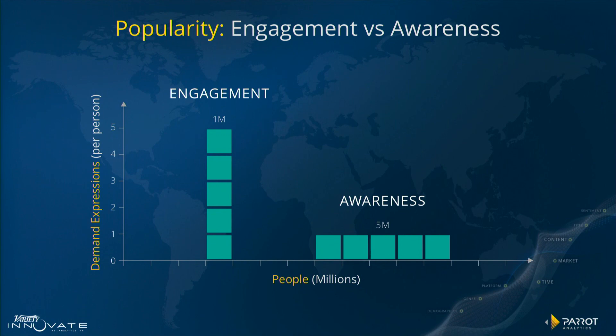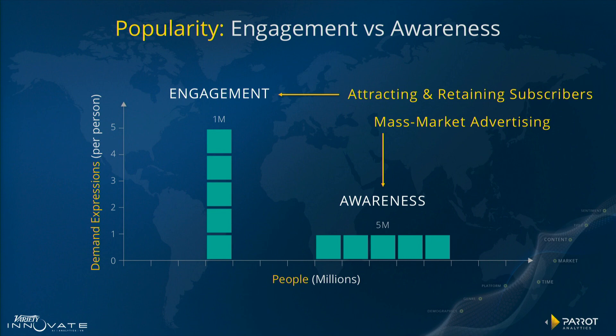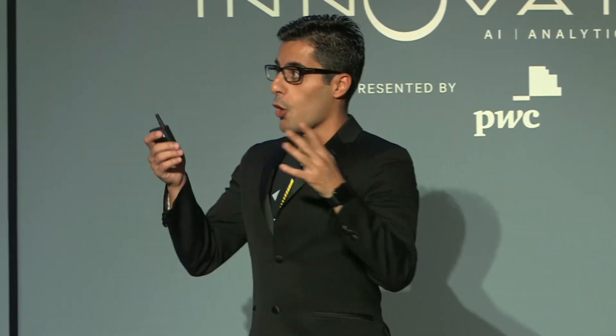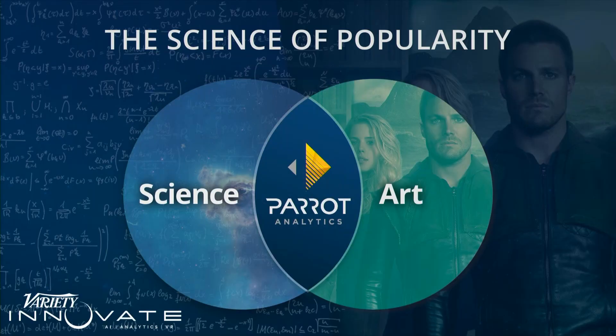Second to last point — two TV shows: one, five million people watch it and do nothing about it. TV show B, one million people watch it, but they express on a per-person basis five times more demand. Which show is more popular? Depends on who you ask. If you're on a platform looking to attract and retain subscribers, that one million people show is your goal. If you're a brand trying to do mass market advertising, the five million people show is your goal. So this seemingly simple question — what is popular — is actually now becoming more of a combination of art and science. Over the next few months, we'll be sharing more and more about advancements in this field. Thanks very much.